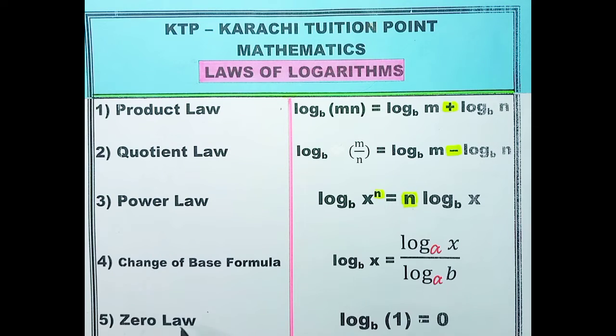Law number 5 zero law. Students, remember whenever the argument is one, the result is always zero. The condition is that base must be positive.